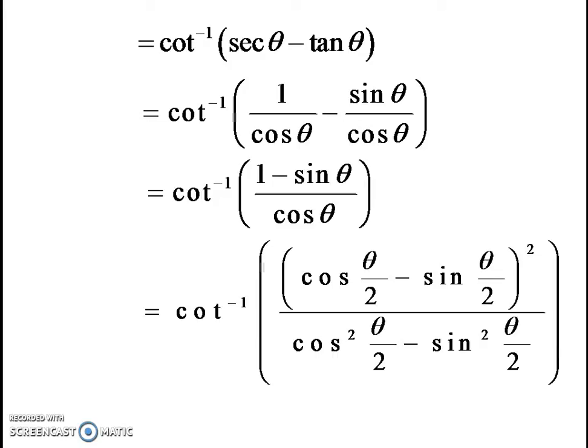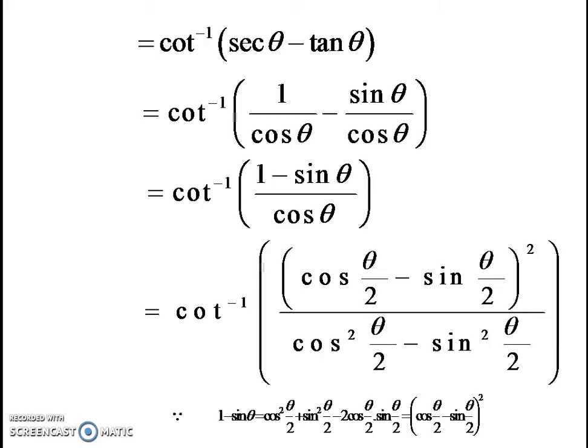The numerator is 1 minus sin theta. You can write 1 as cos squared theta by 2 plus sin squared theta by 2, and for sin theta write 2 cos theta by 2 times sin theta by 2. By the algebraic identity a squared plus b squared minus 2ab equals a minus b whole squared, the numerator 1 minus sin theta can be rewritten as cos theta by 2 minus sin theta by 2 whole squared.